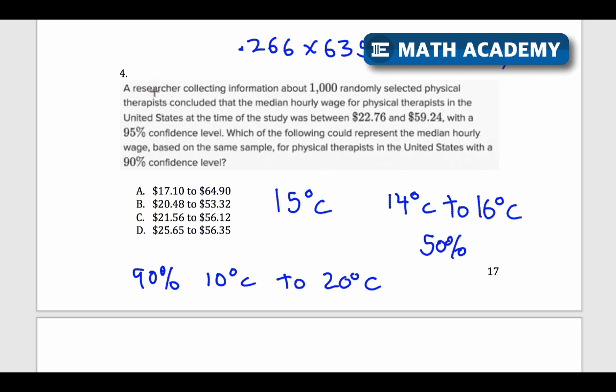So let's apply that idea here. A researcher collected information about 1,000 randomly selected physical therapists concluded that the median hourly wage for physical therapists in the United States at the time of the study was between $22.76 and $59.24 with a 95% confidence level. Okay, so this is saying that their estimate for the median was between about $22 and $59. They're 95% confident that that's what the actual median is between. Which of the following could represent the median hourly wage based on the same sample for physical therapists in the United States with a 90% confidence level? Oh, so the confidence level decreased. They're less confident that it would be between this new interval compared to the old one.